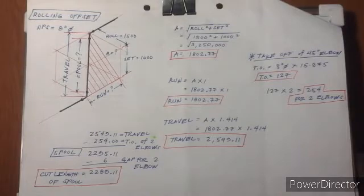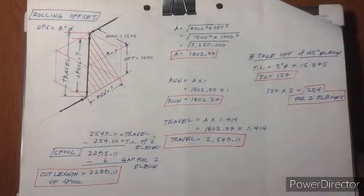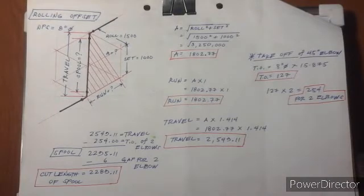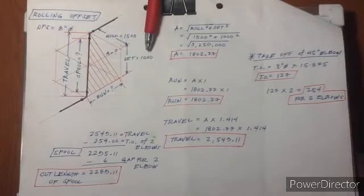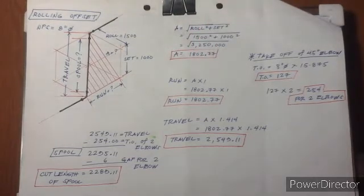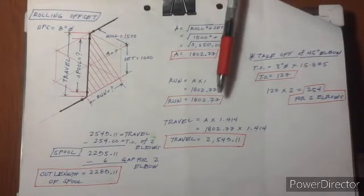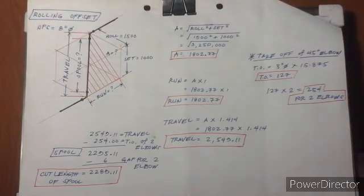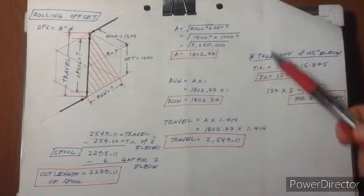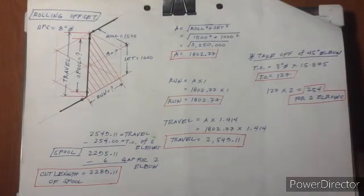As an example, I have here a roll measuring 1,500 and the set measuring 1,000, and we have to find the run, the travel, and the spool. In the standard formula, the value of A equals the square root of roll squared plus set squared. For the run, the formula is the value of A multiplied by 1. For the travel formula, travel equals the value of A multiplied by 1.414. The constant 1.414 is given because the cotangent of 45 degrees is 1.414.